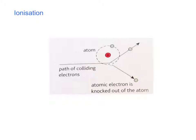When alpha, beta and gamma radiation passes through a substance, it collides with the atoms in that substance, creating ions. Another way, as in this diagram here, is electrons — electrons passing through a fluorescent tube, colliding with atoms of the gas in the tube, and knocking an electron out of the outer shell.